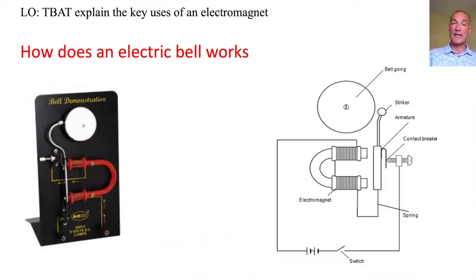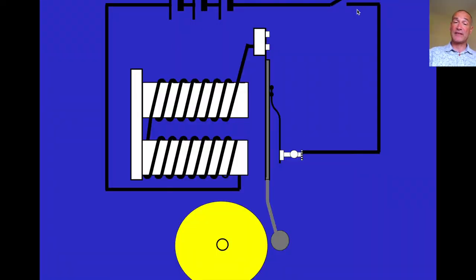So next one you need to know is how an electric bell works. Now these are really old-fashioned electric bells. You might still have one in your house, we've still got one. I had one when I was a kid. They're not electronic ones, they work mechanically. Quite often old fire alarms are also like this as well.